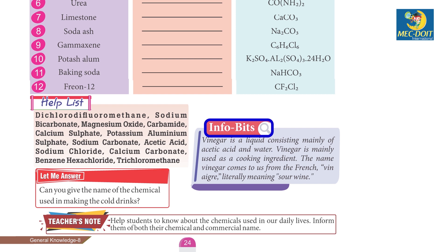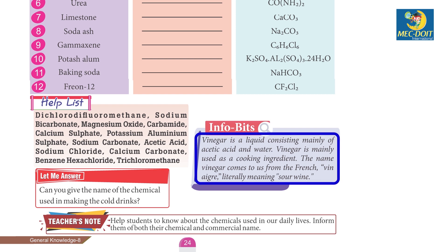Info Bits: Vinegar is a liquid consisting mainly of acetic acid and water. Vinegar is mainly used as a cooking ingredient. The name vinegar comes from the French 'vin aigre', literally meaning 'sour wine'.